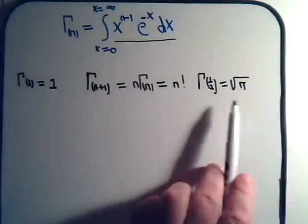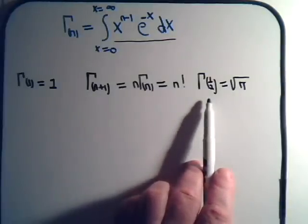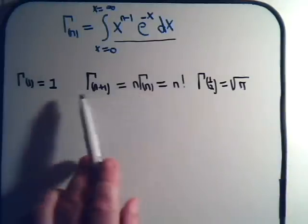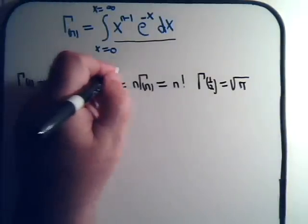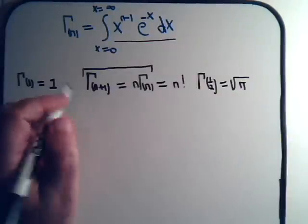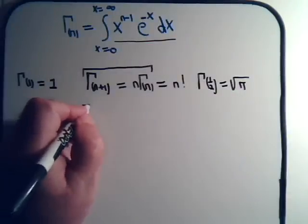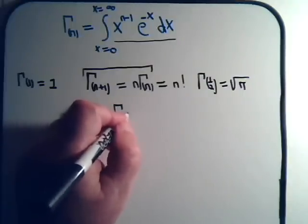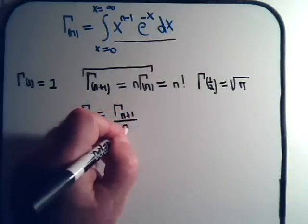We will show this to be true in the next video, but once we have done that we're going to use our knowledge base of gamma functions to solve various types of integral problems. In this video we're going to establish some more basic properties of the gamma function, really relying upon this relationship — or equivalently, the gamma function of n equals the gamma function of n+1 divided by n.